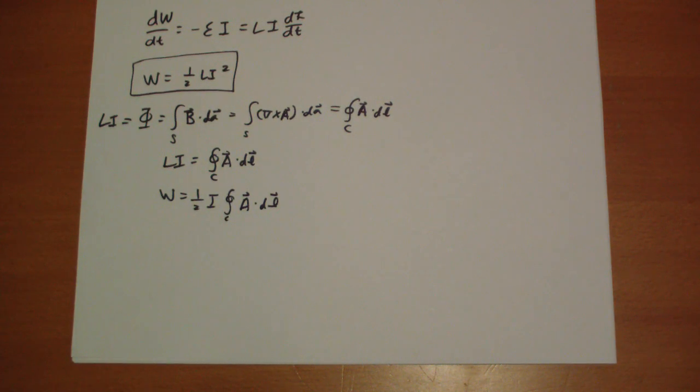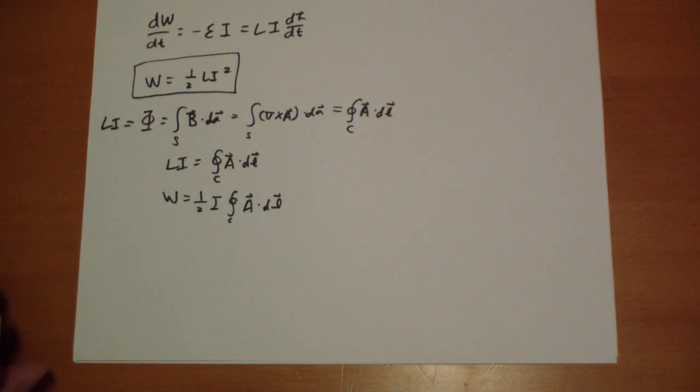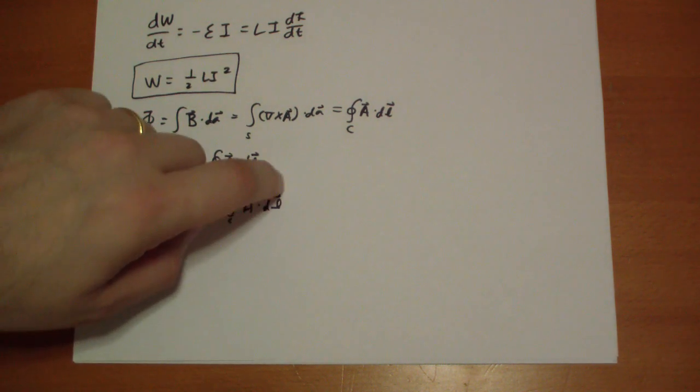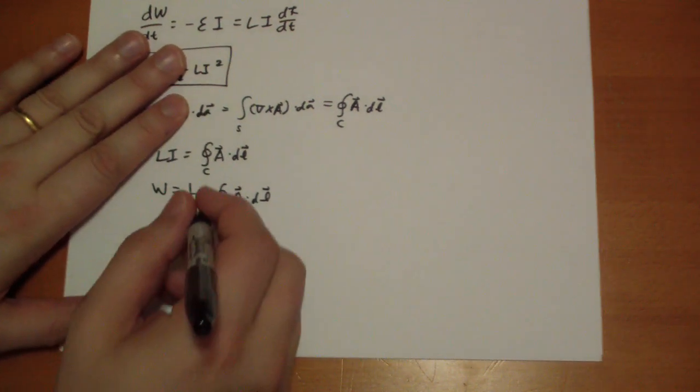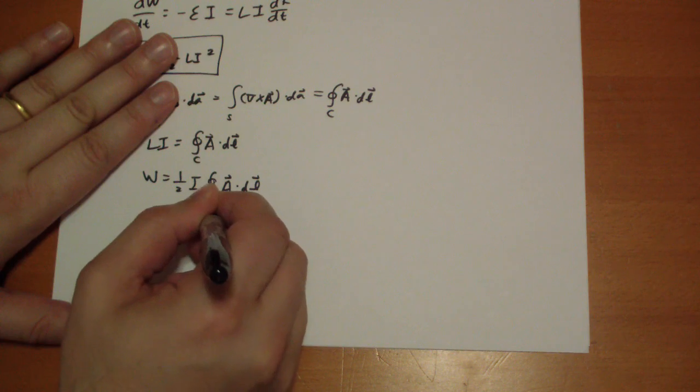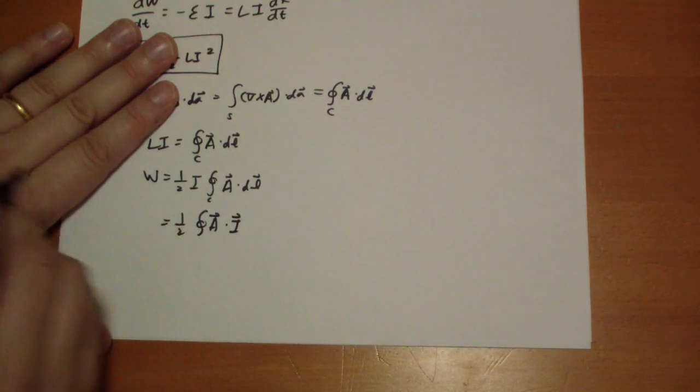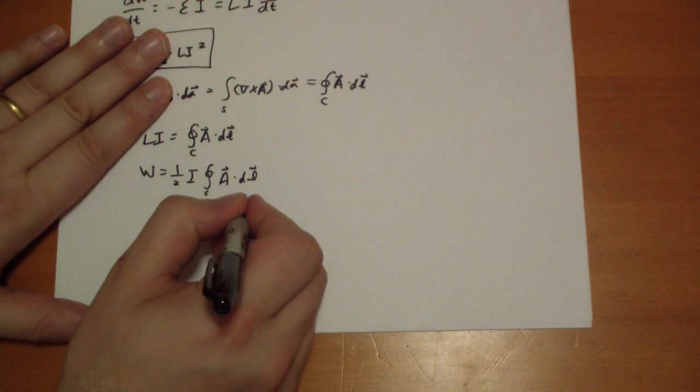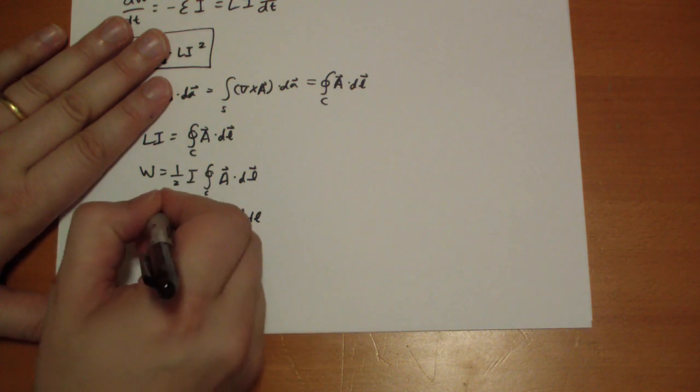And if we take this i and move it on the inside, and say this is the i that's traveling around the circuit, so now we can write this as one half A vector dot the i vector,